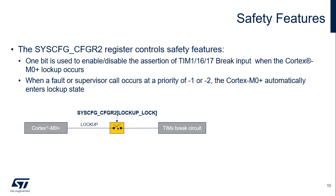The SysCFG_CFGR2 register contains the control and status bits linked to safety. The lockup lock control bit enables the connection of the Cortex-M0+ lockup state towards the timer's break inputs. This allows timer outputs to be placed in a known state during an application crash. Once programmed, the connection is locked until the next system reset.